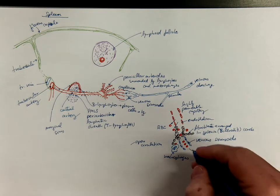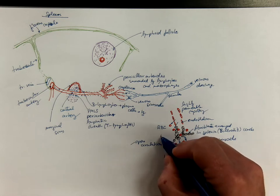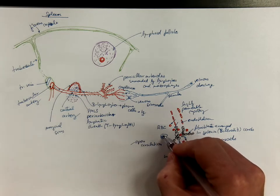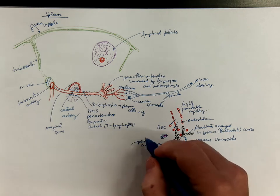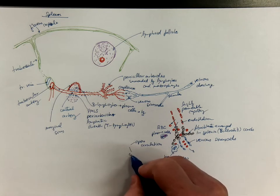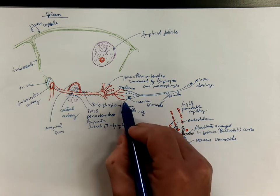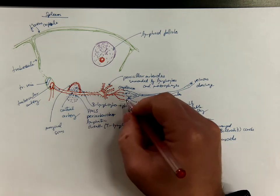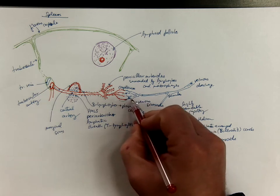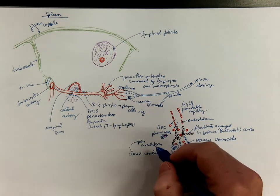Moreover, there are also plasma cells here that are producing immunoglobulins in this labyrinth. There is also so-called closed circulation, which means some of the arterial capillaries directly continue into the venous capillaries, so the formed blood elements may easily pass through. So both mechanisms occur in the human spleen.